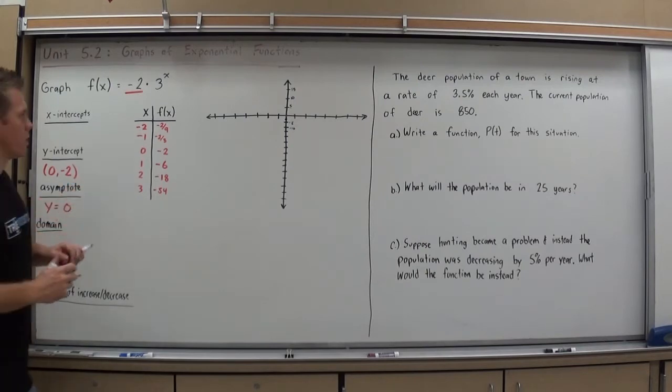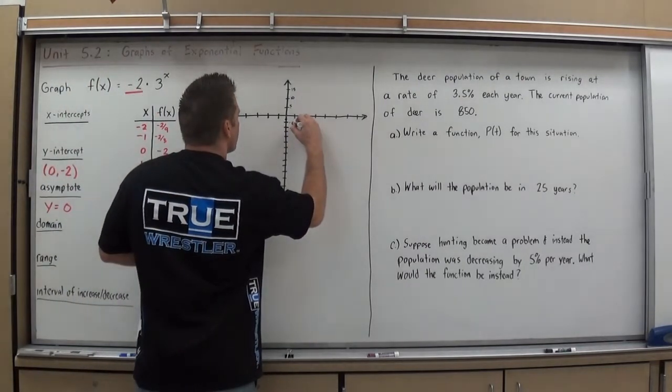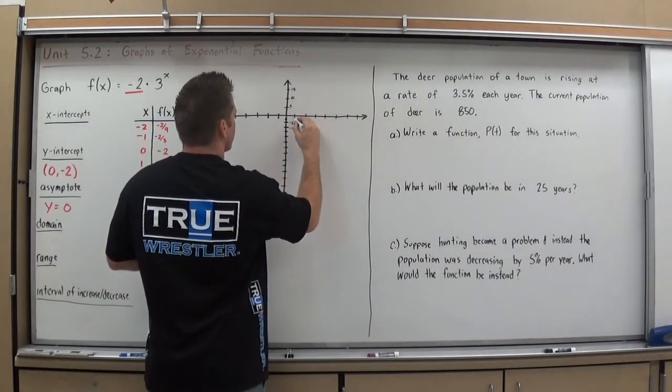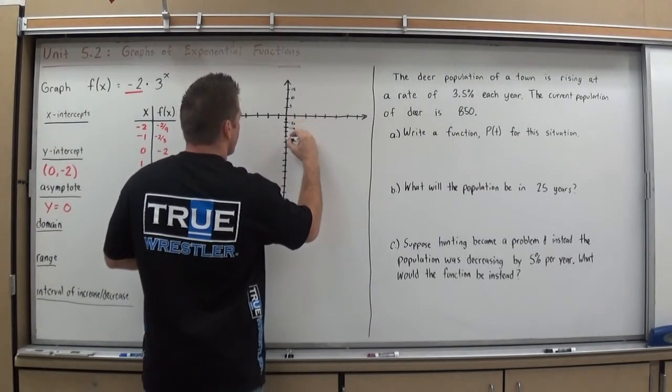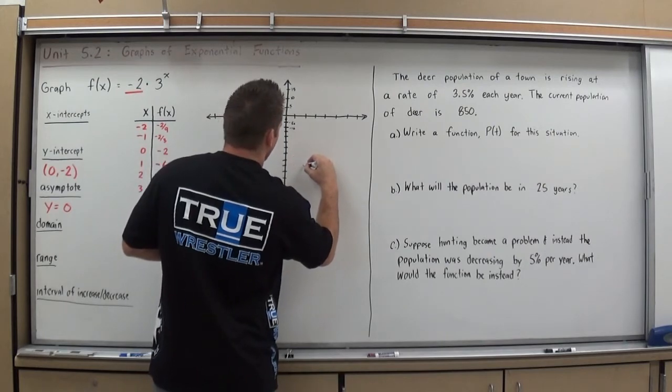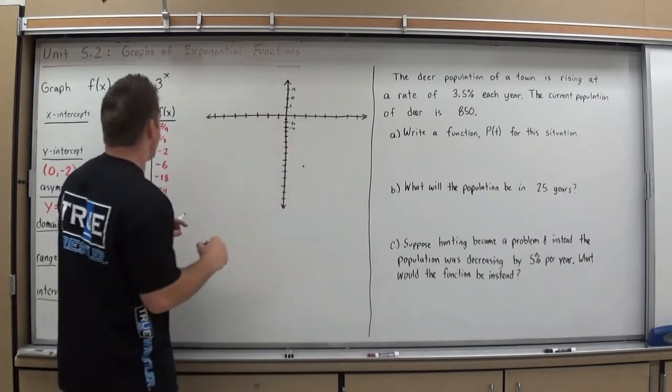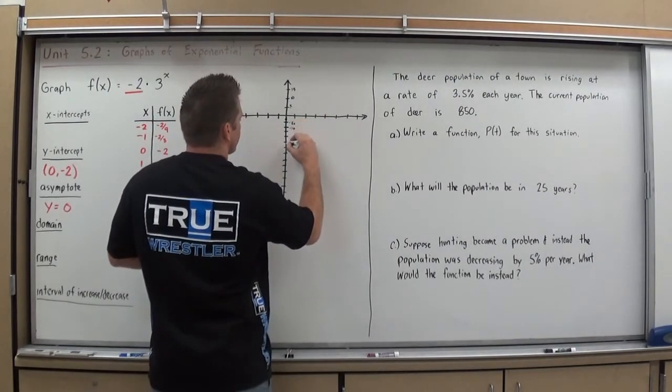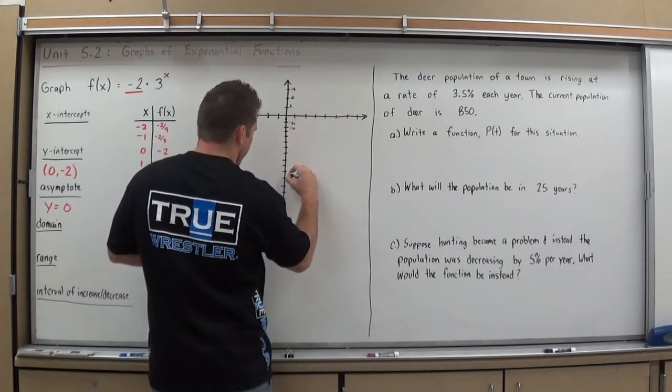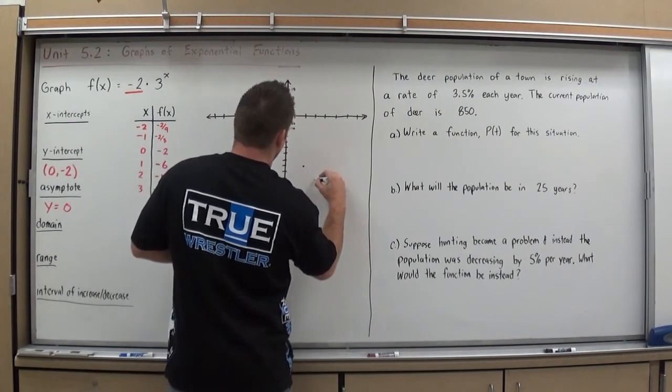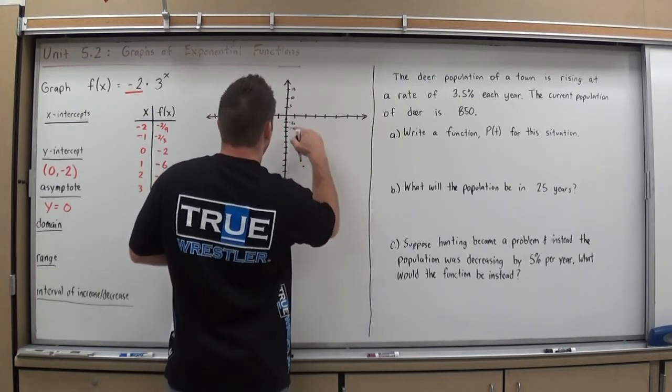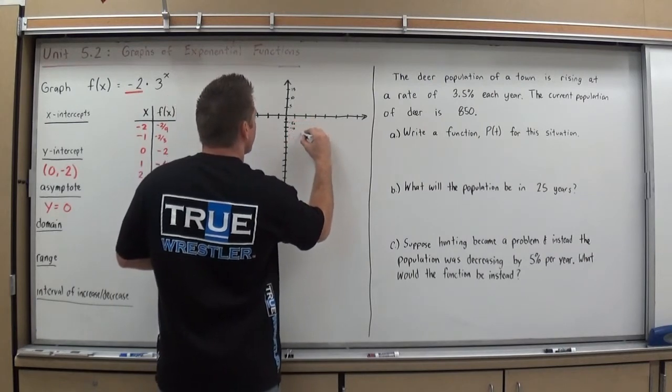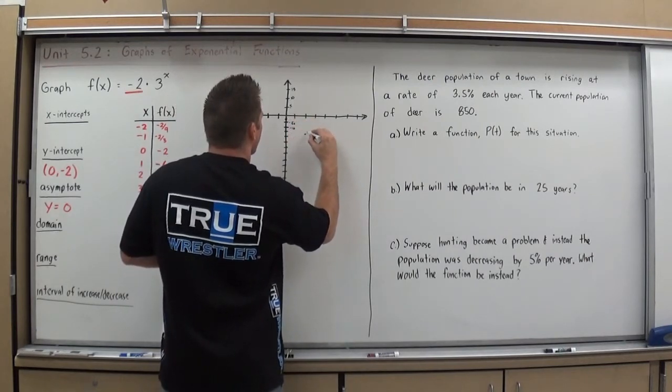Let's continue plotting. 1, negative 6 puts me around here. 2, negative 18. Now, I start to really drop down. 2, 4, 6, 8, 10, 12, 14, 16, 18, and over. And then, 3, comma, negative 54. [counting by 5s] So, 54 would be around here. Oops. I went way too low on 18. My bad. 18 here. Sorry.